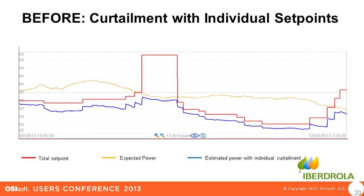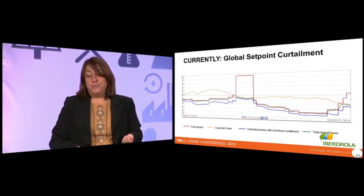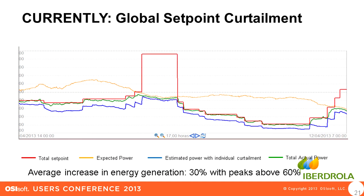The red line is the global set point. The blue line is what we produced with the former strategy of individual wind farm curtailment. The gap between the blue line and the red one is not that big, but it is a little big. With this new strategy, what we got is the green line, which is much closer to the set point — an average increase of 30%.